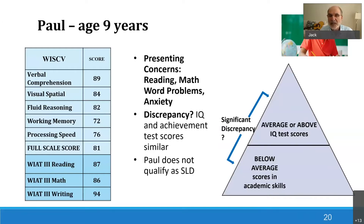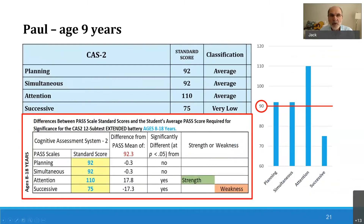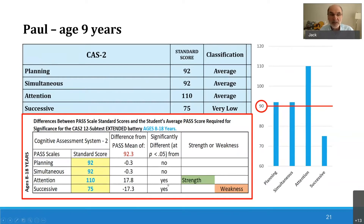Look what Steve found when he gave the Cognitive Assessment System. The boy had a 92 in planning, a 92 in simultaneous, 110 in attention, but a 75 on successive processing. When we analyze these scores — using a spreadsheet I'll tell you about that you get for free — we find he has a strength in attention and a weakness in successive processing, but he's also pretty good in planning and simultaneous.